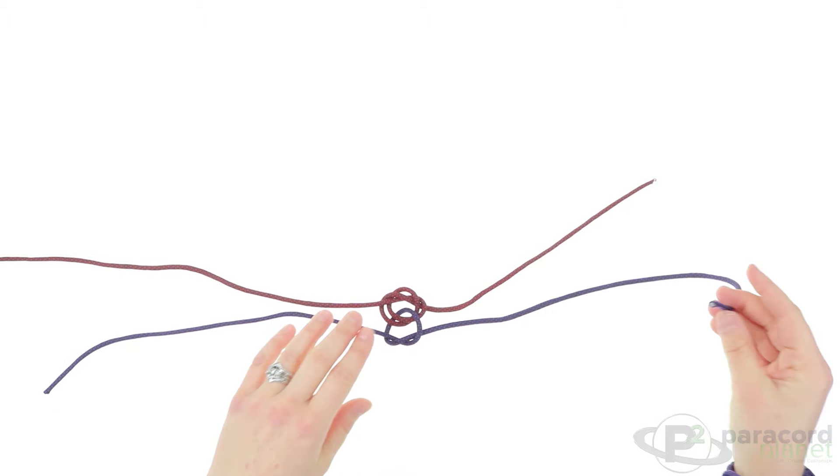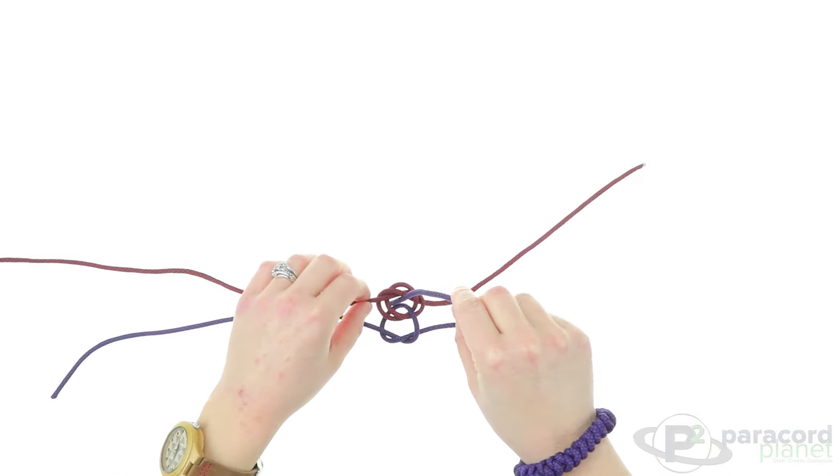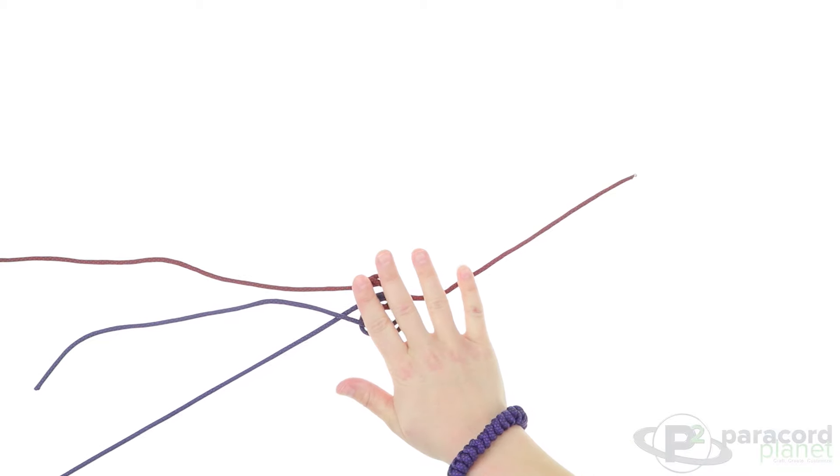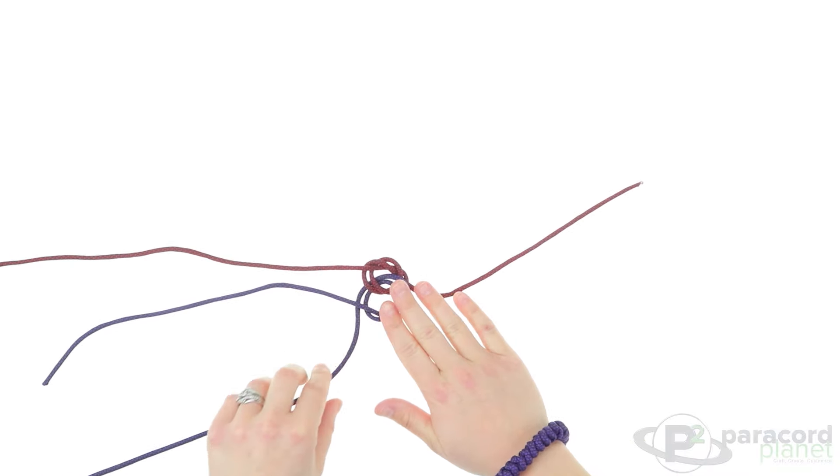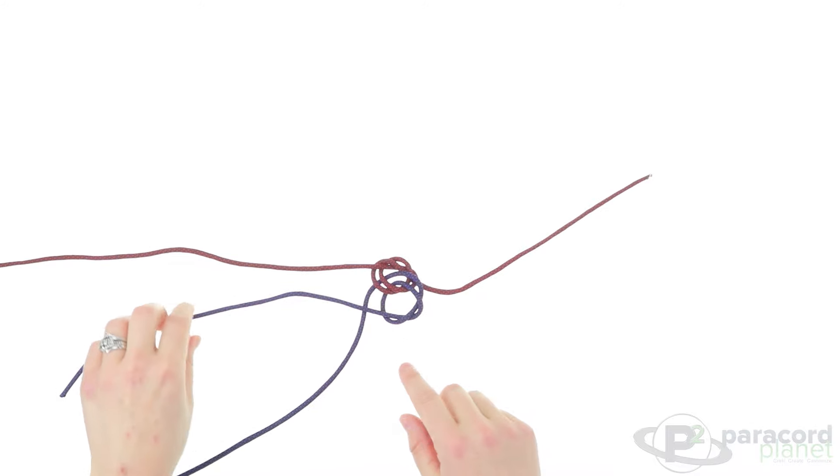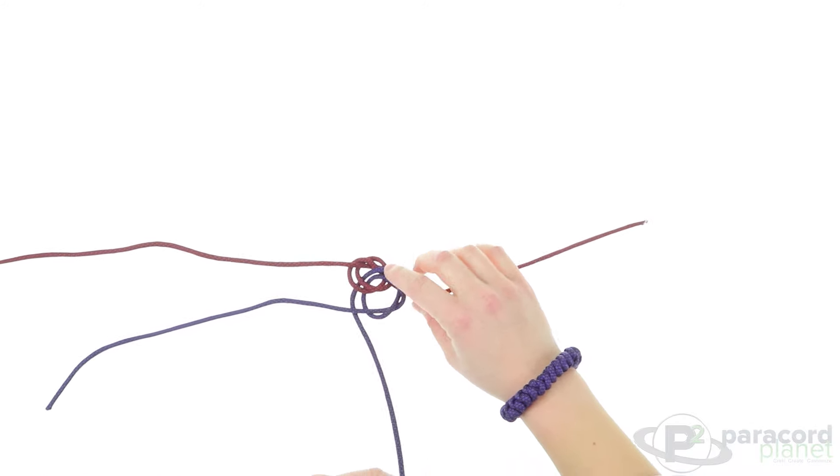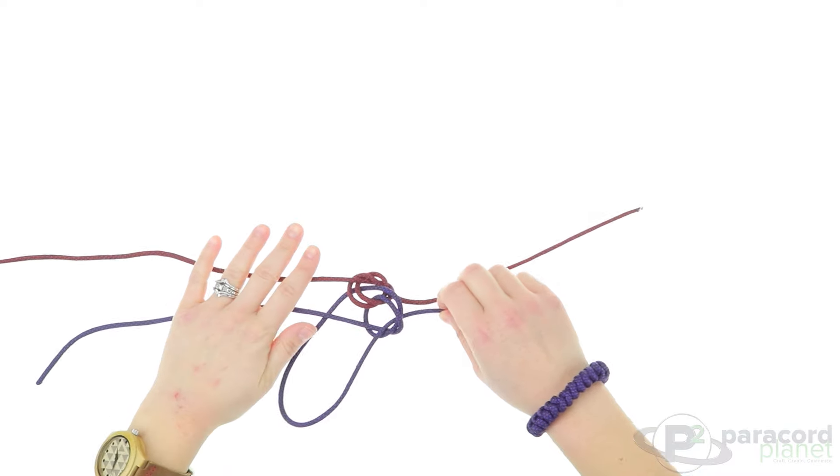Take your cord on the right, go down through gently, then you're going to go under the cord on the left here, then you're going to go down through the circle.